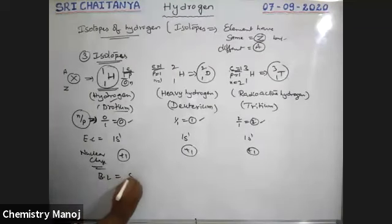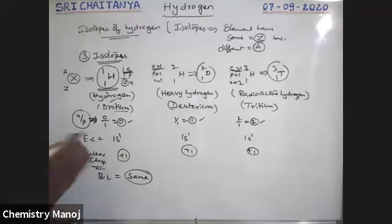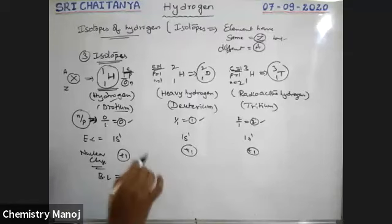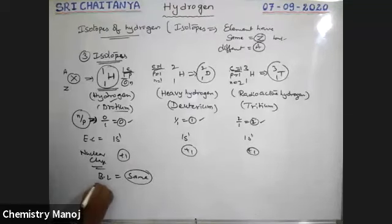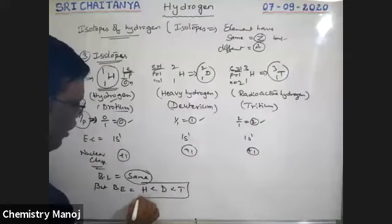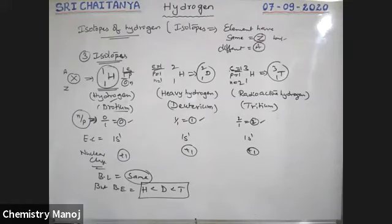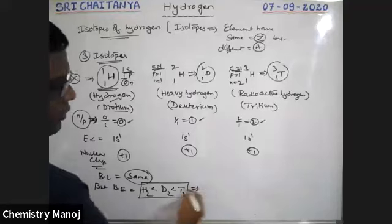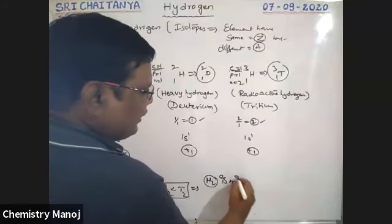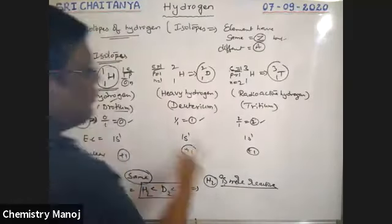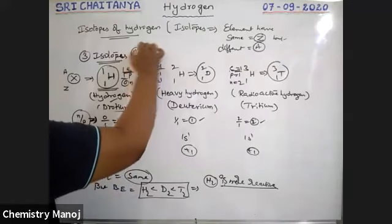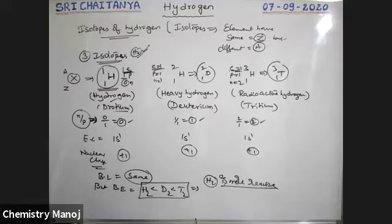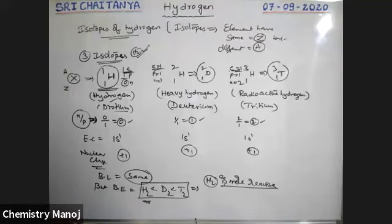Bond lengths between H−H, D−D, and T−T are all the same. However, bond energies differ: H₂ < D₂ < T₂. Because H₂ has the least bond energy, among all three isotopes of hydrogen, H₂ is the most reactive. Hydrogen is more reactive than deuterium, which is more reactive than tritium.